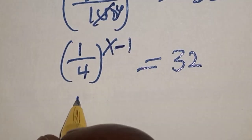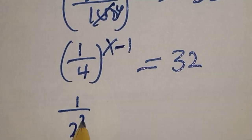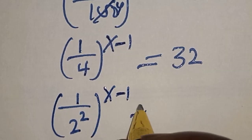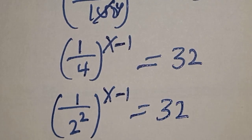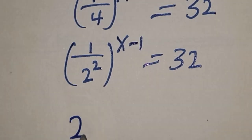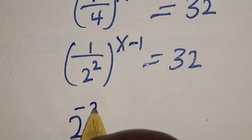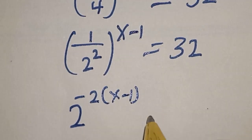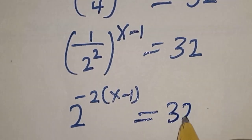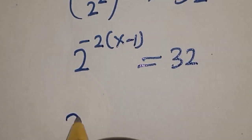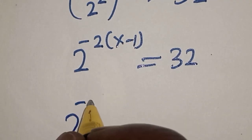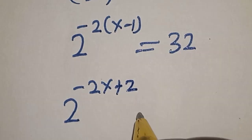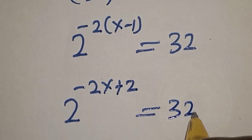This is 1 divided by 2 squared, raised to power s minus 1, is equal to 32. Then this is 2 raised to power minus 2 into s minus 1 is equal to 32. Expanding, 2 raised to power minus 2s plus 2 is equal to 32.